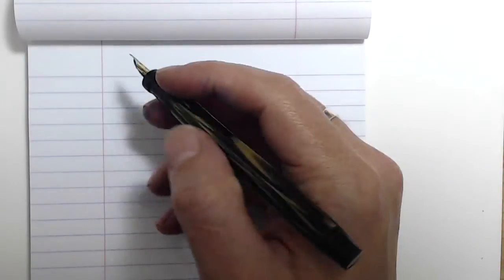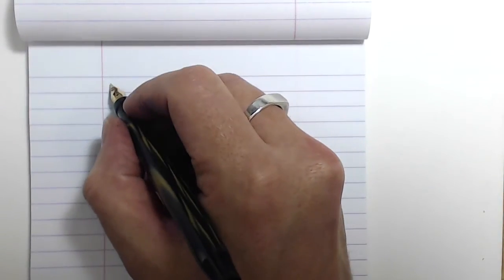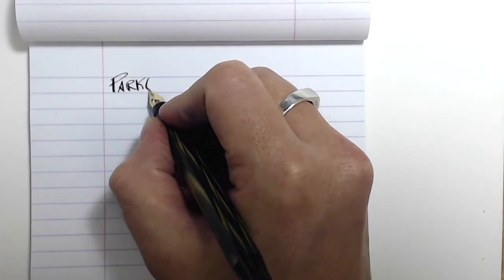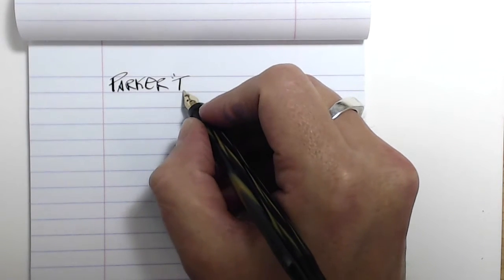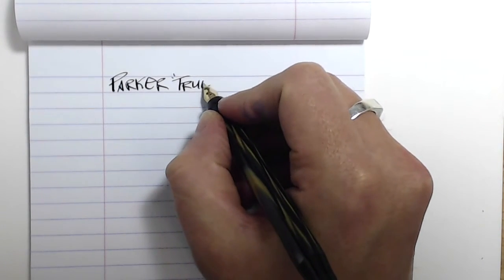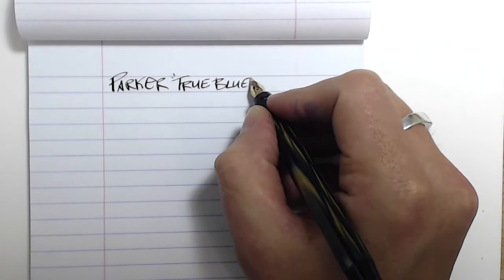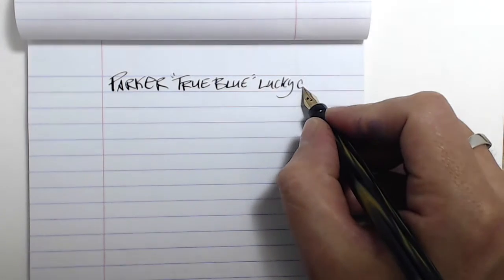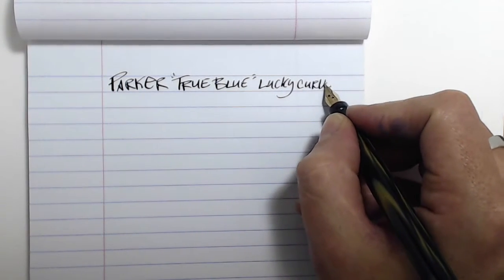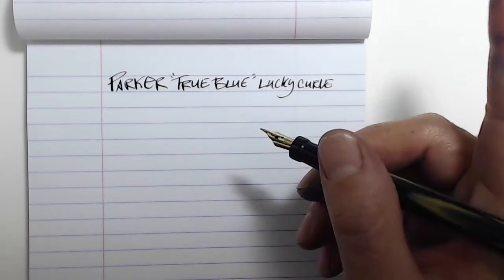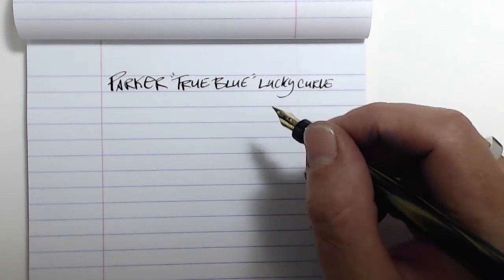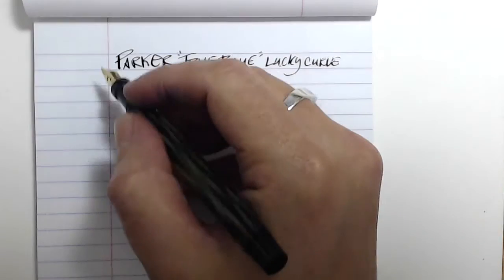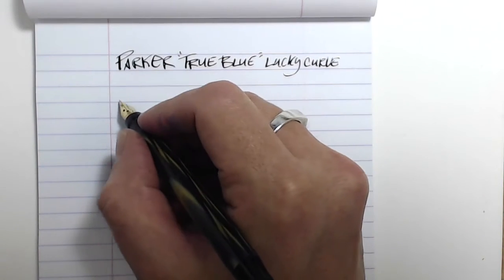Let's do the writing sample. This is the Parker True Blue Lucky Curve. The ink is Waterman Black. Intense Black, I think it was when I bought it. Quite a long time ago now, actually. One of the first bottle inks I ever bought. So let's do some writing.